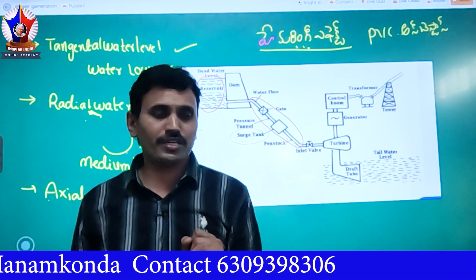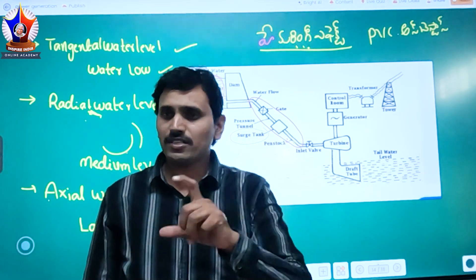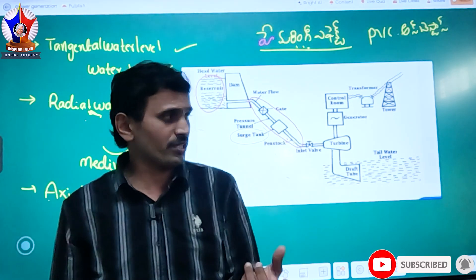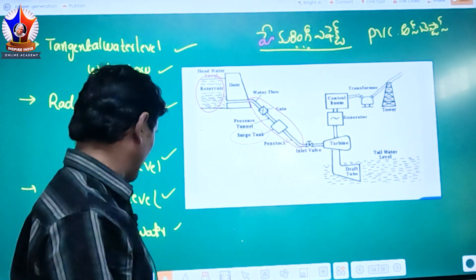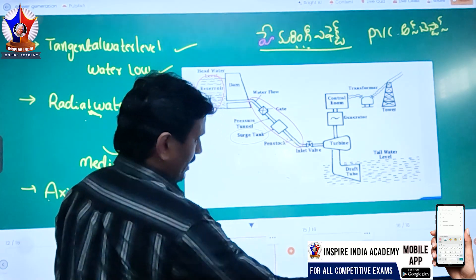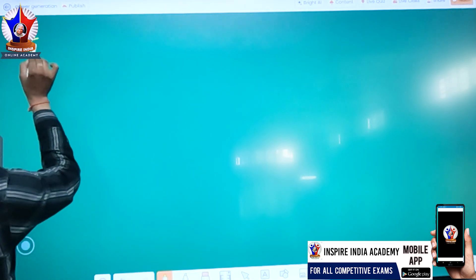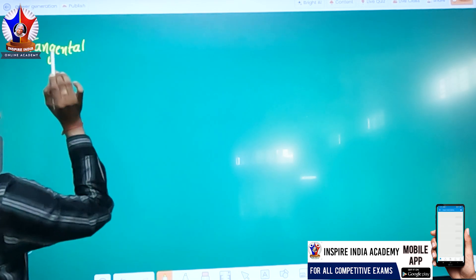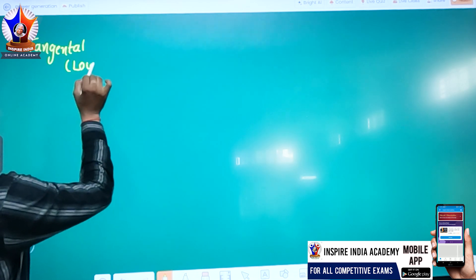After that, the turbine issue involves every surge tank and penstock. The last examination is the trend of the turbine — what is the turbine? First of all, we have a turbine. What is the water level? What is the tangential water level? The water level is low.